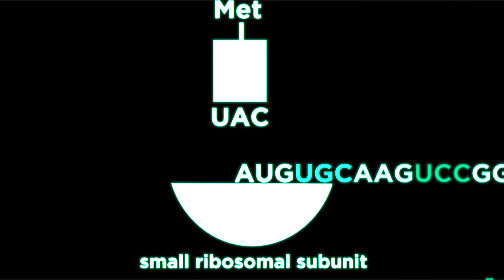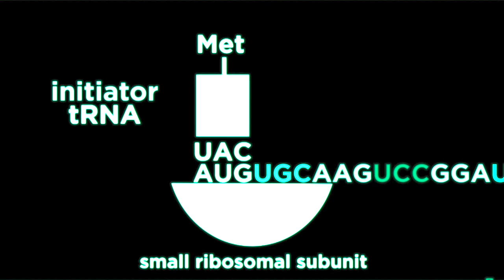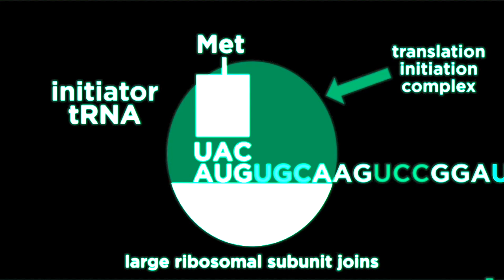At this point, a tRNA, or transfer RNA, then comes into the picture. The large ribosomal subunit appears and binds to form the translation complex.